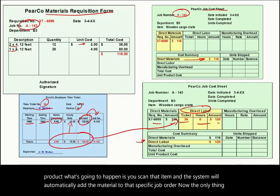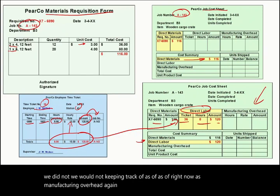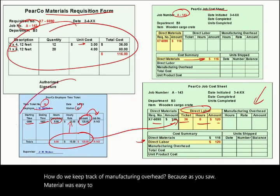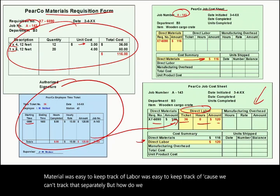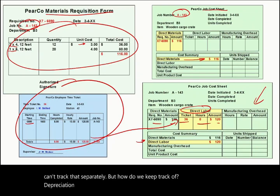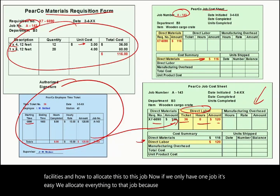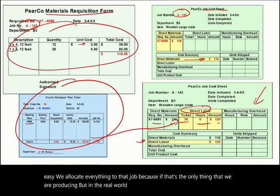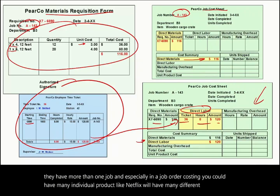The only thing we are not keeping track of yet is manufacturing overhead. Material was easy to track; labor was easy to track because we can trace them separately. But how do we keep track of depreciation, taxes, rent, utilities, and insurance that are part of the production facilities, and how do we allocate these to this specific job? If we only have one job, we allocate everything to it. But in the real world, companies have many products — especially in job order costing, you could have many individual jobs, like Netflix working on many movies simultaneously.